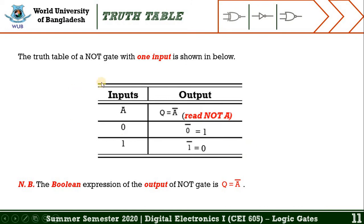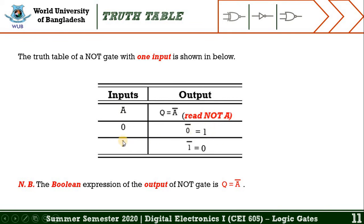From this slide we may learn the truth table of the NOT gate. This gate has one input symbolized by the capital letter A and the output is symbolized by Q. Since this gate has only one input, we can assign just one binary number — either zero or one. If the input value is zero, then the output is one. If the input value is one, then the output is zero.